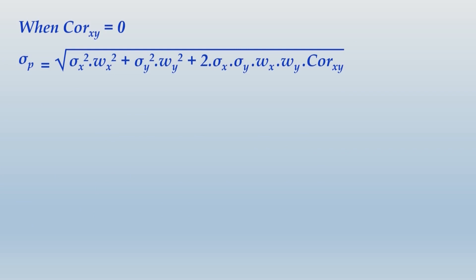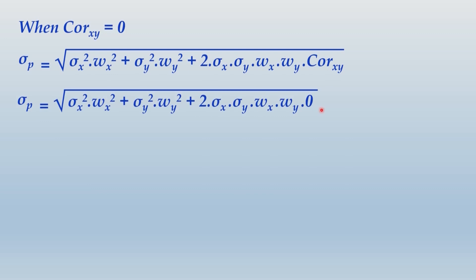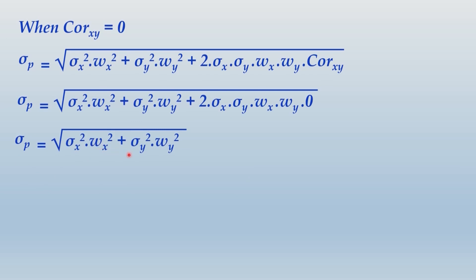When correlation between X and Y equals zero: the entire third term becomes zero. Therefore sigma P = square root of (sigma X² × WX² + sigma Y² × WY²).